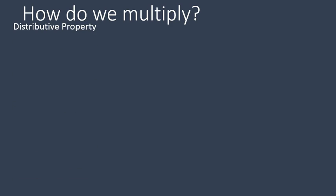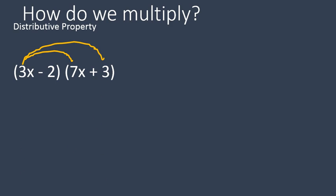So let's look at what happens when we multiply a binomial times a binomial. I prefer to use the distributive property — that's my preferred method. I'm going to teach another method in the next lesson, but this is my preferred method: multiplying using the distributive property. What the distributive property says is that everything inside the first set of parentheses gets multiplied times everything inside the second set of parentheses.